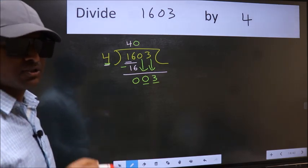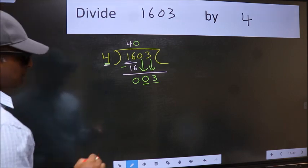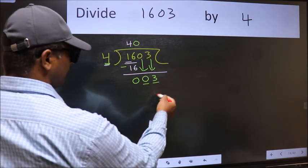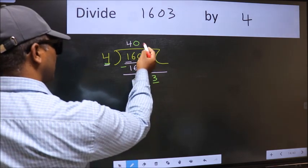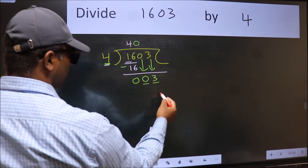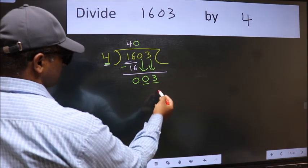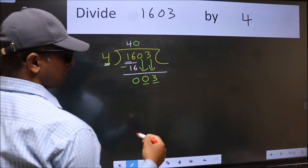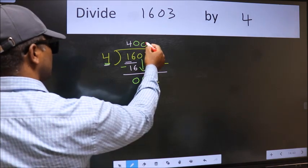Instead, what you should think of doing is, which number should we take here? If I take 1, we will get 4. But 4 is larger than 3. So, what we should do is, we should take 0.